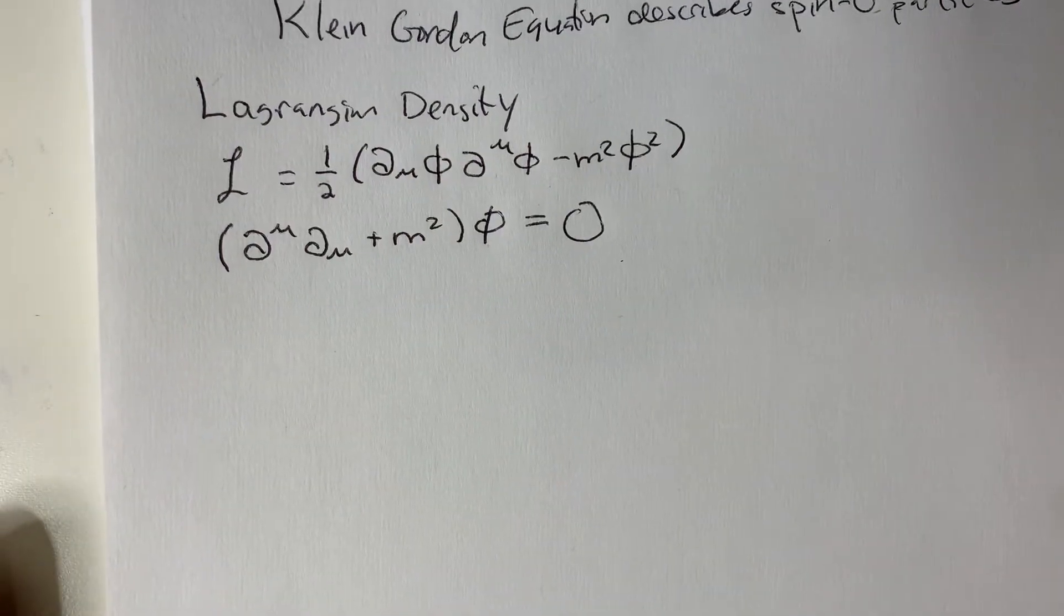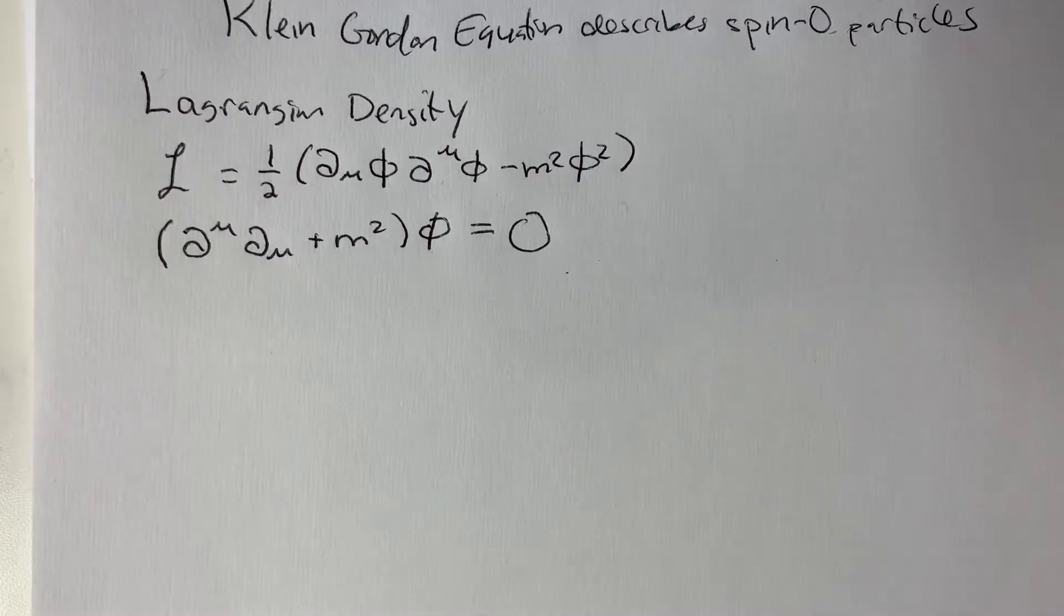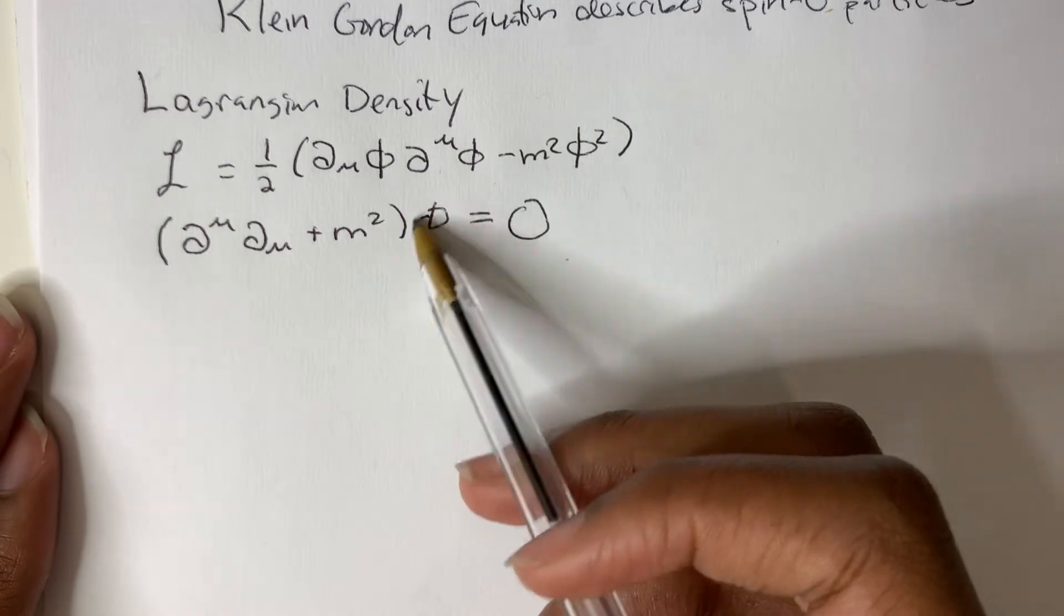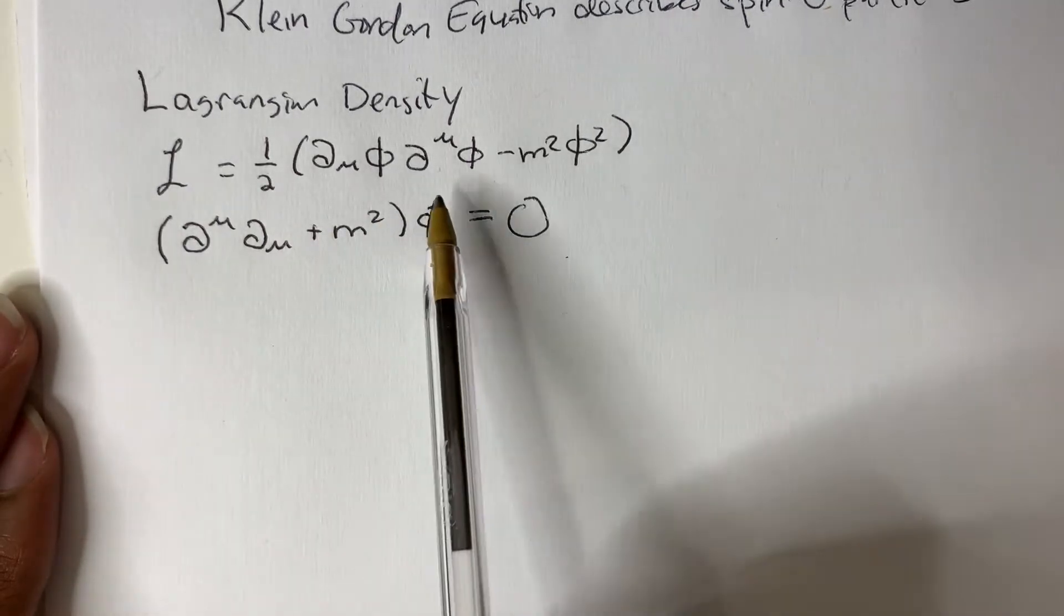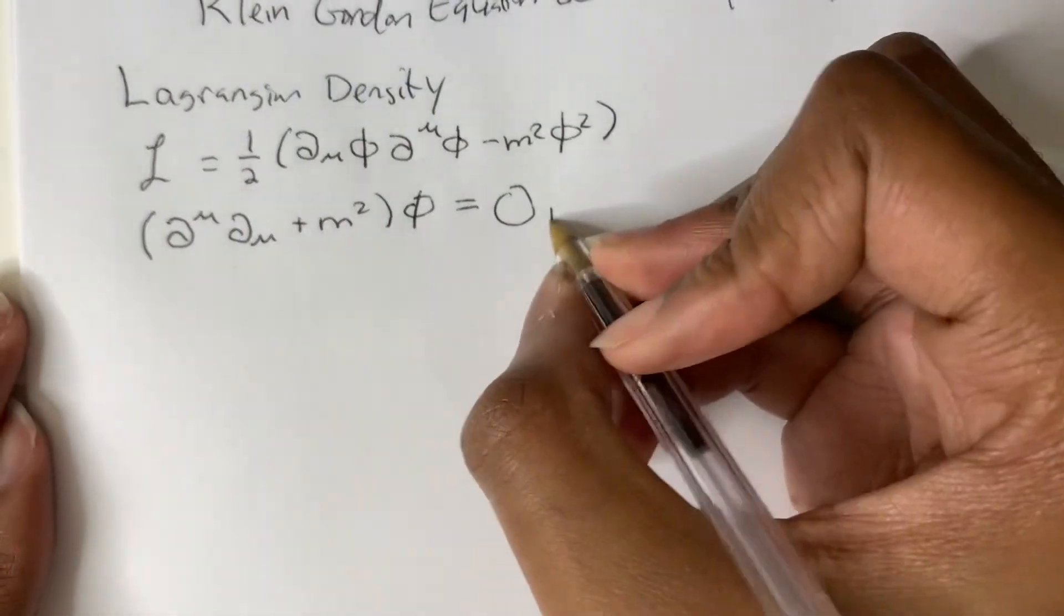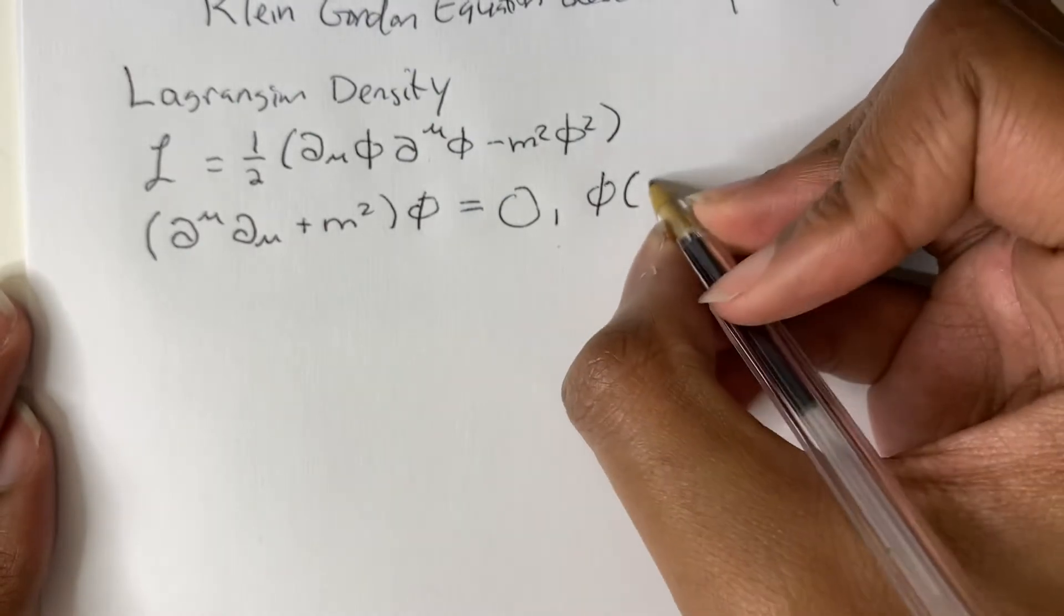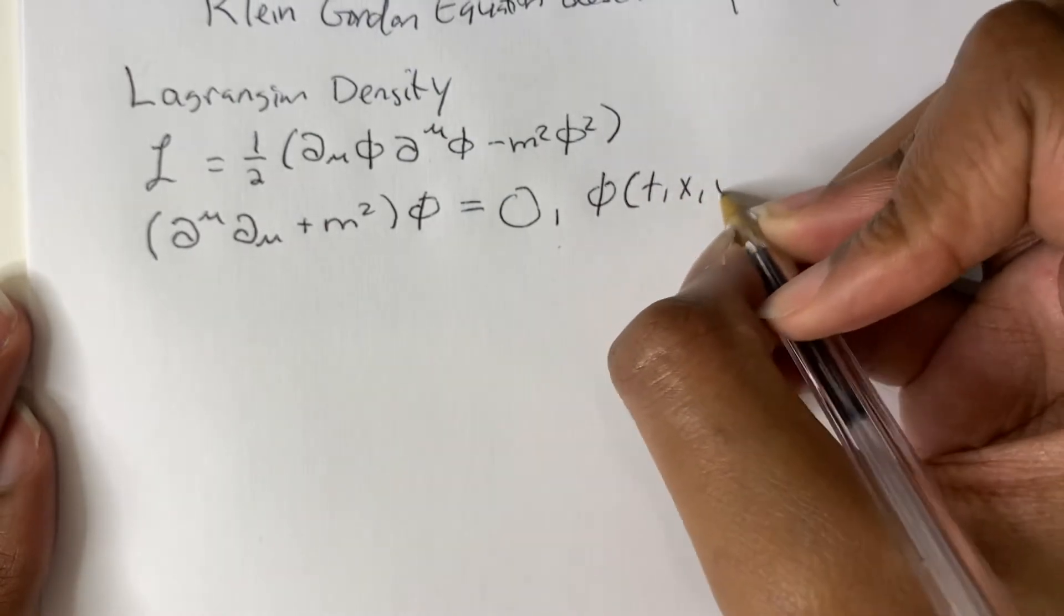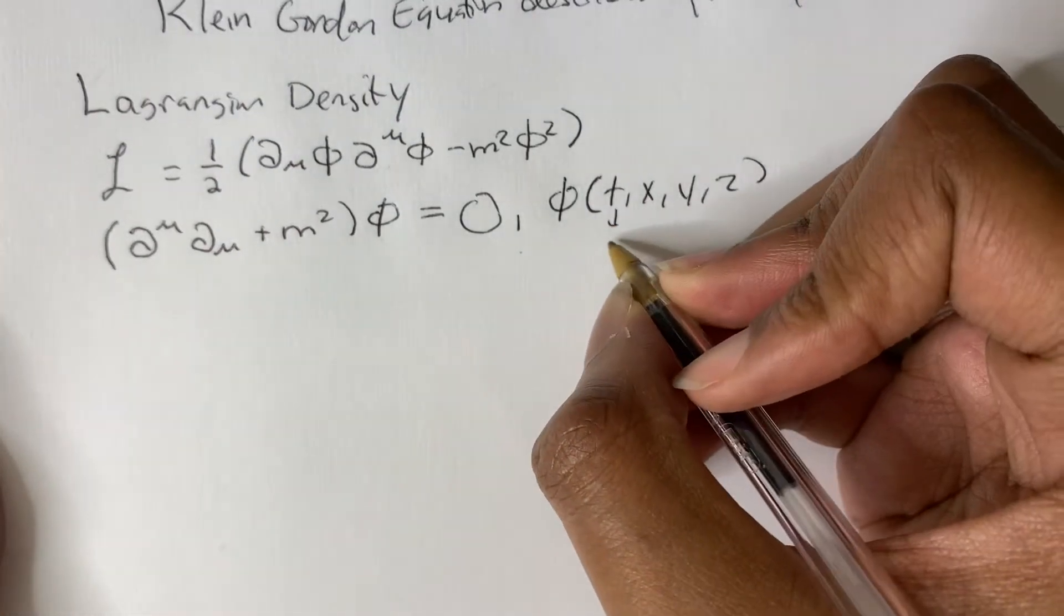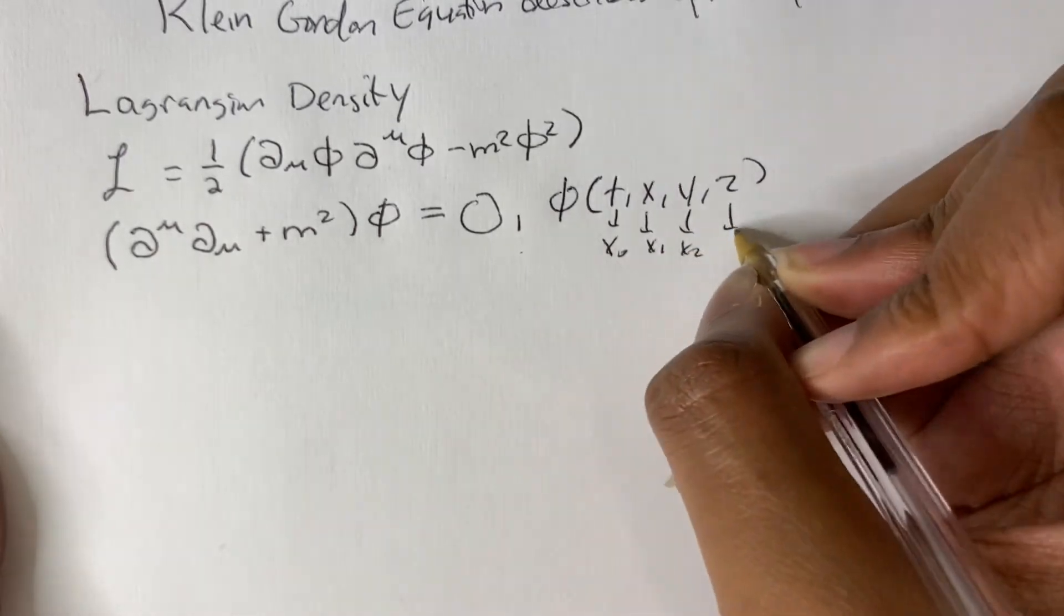So how do we solve this? Well, it's actually pretty straightforward. What we do here is we first attribute this phi to over here. Also, note that this is the field. Before we do that, phi is a function of time x, y, and z.